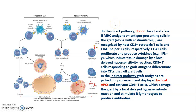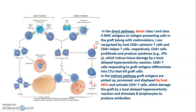The mechanism of recognition and rejection of allograft has two pathways: direct pathway and indirect pathway. In the direct pathway, the donor class 1 and class 2 MHC antigens on antigen presenting cells are recognized by the host cytotoxic T cells CD8 and CD4 helper cells. Class 1 antigens are recognized by CD8 cytotoxic T cells and class 2 antigens are recognized by CD4 helper cells. Basically in the direct pathway, the donor antigens are recognized by host T cells.